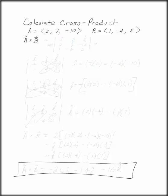Calculate the cross product of A and B where A is 2, 7, negative 10, and B is 1, negative 4, 2. I like to do the cross product with the determinant method.